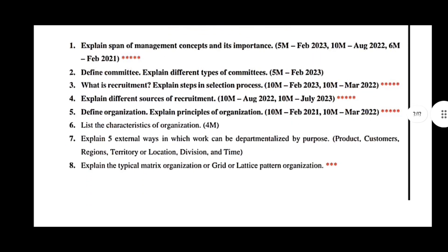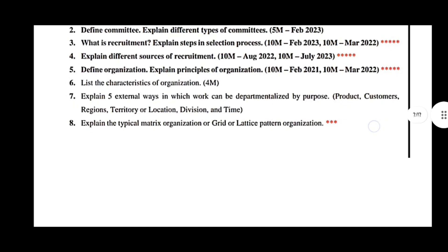Define an organization and explain principles of organization — 10 marks, February 2021 and March 2022. List characteristics of organization. Explain five external ways in which work can be departmentalized by purpose, product, customer, region, territory or location, and time. Also explain the typical matrix organization or grid or lattice pattern organization — these are also important.